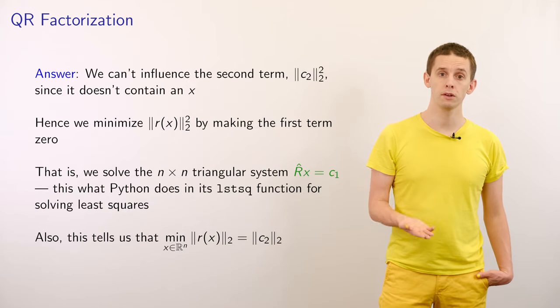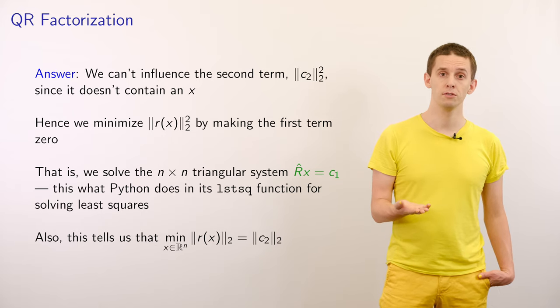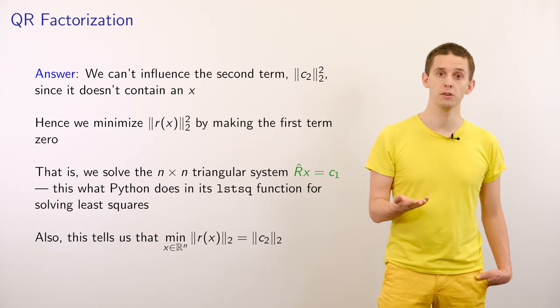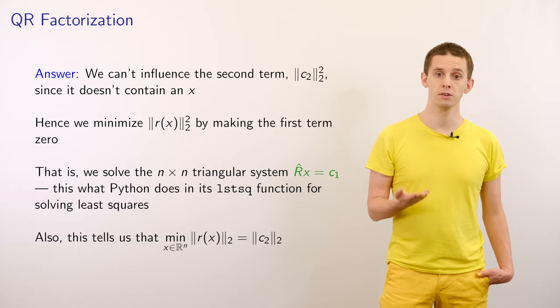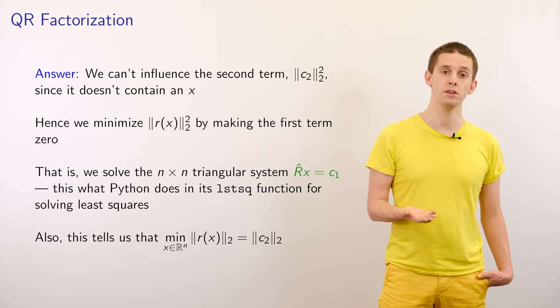However, if we look at the first term, we see that we have a linear system that we can solve. We can minimize the size of this term by setting R hat of X equal to C1.